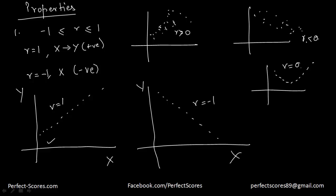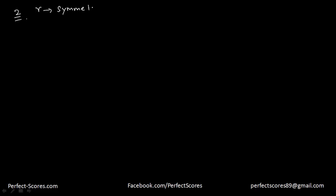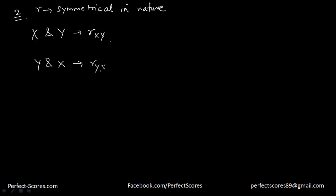That is the first property. Now let's talk about the second property: the value of r is symmetrical in nature. When I say symmetrical, that means if I calculate the coefficient of correlation between x and y — known as r-xy — or if I calculate the coefficient of correlation between y and x — known as r-yx — the value of r will be the same in both cases. So r-xy is equal to r-yx.